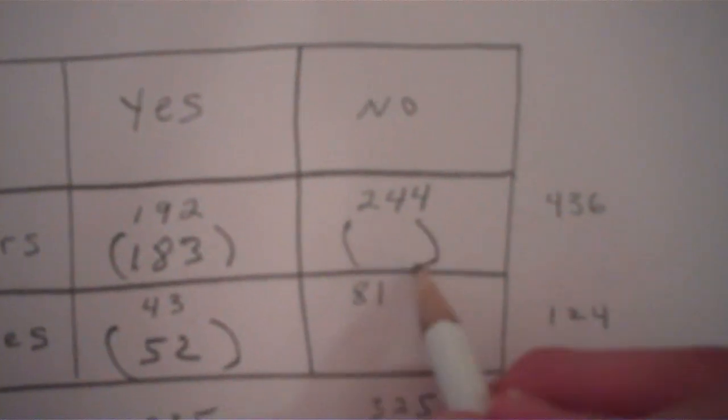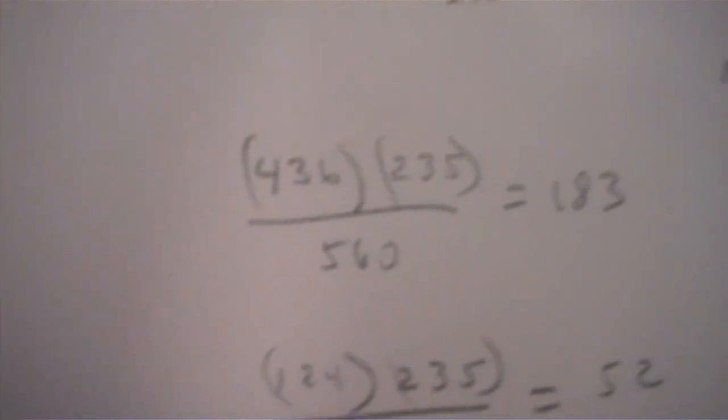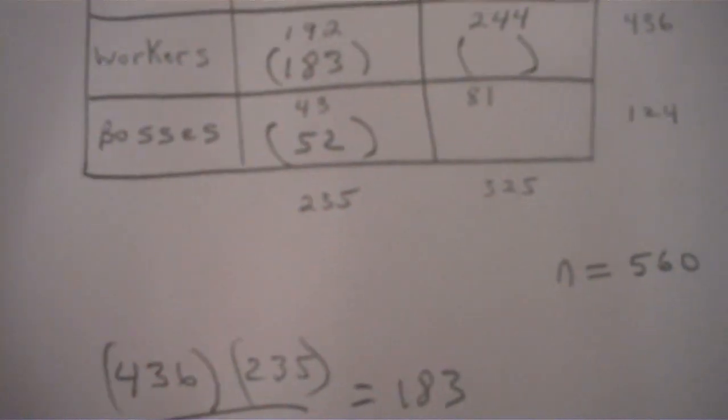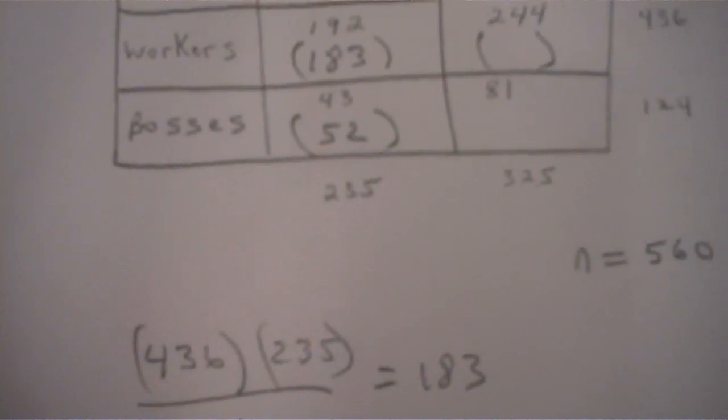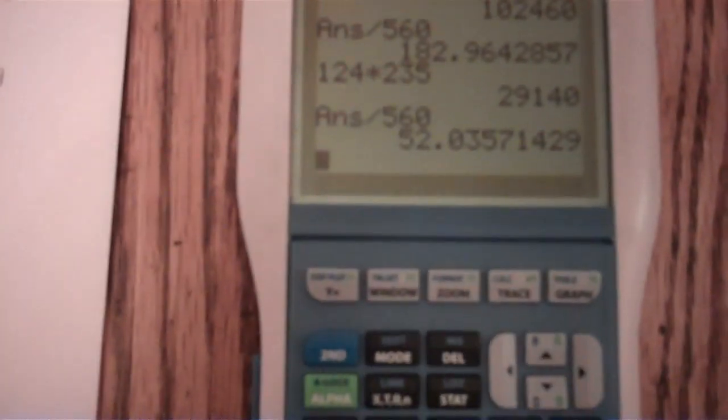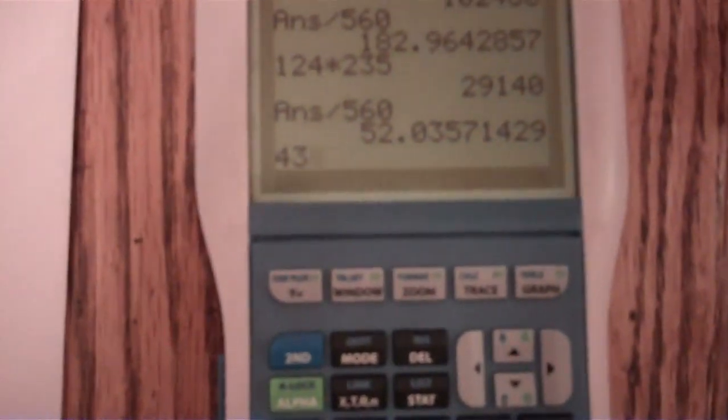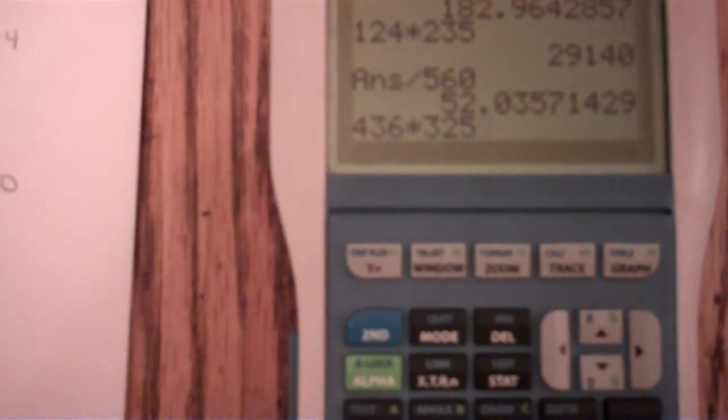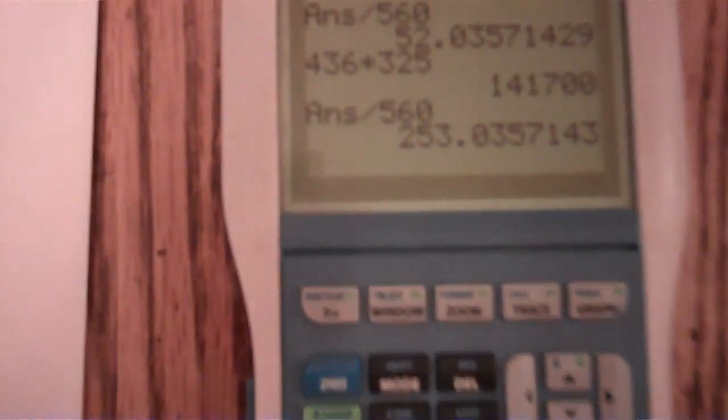Now for this one, we take this row total of 436, this was 52. So 436, this column total is 325, all divided by 560. And we're going to get 436 times 325, enter, and divided by 560. And we get 253. So this is going to be 253.